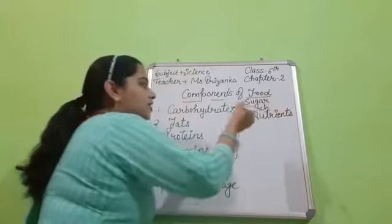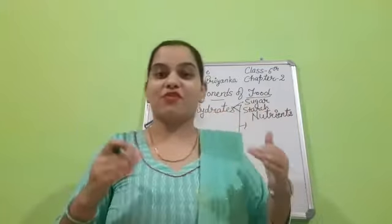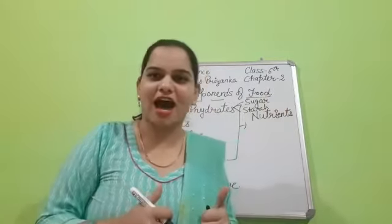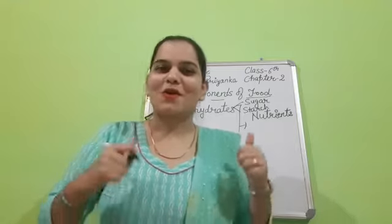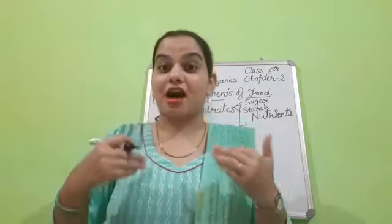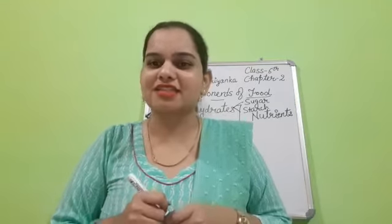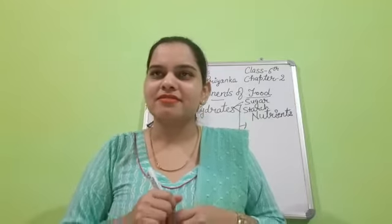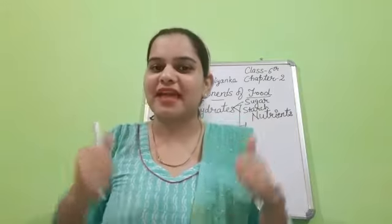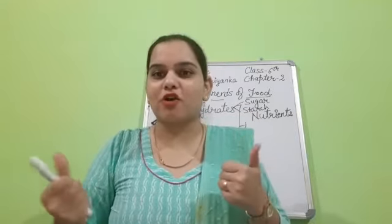Sugar is the simple form and starch is a complex form. What is sugar? Simple form. And what is starch? Complex form. Great. Foods rich in carbohydrates are potato — do you eat potato? Yes, ma'am. What does it contain? Carbohydrate. Great. Bread — do you eat it? Yes, ma'am. Table sugar used in tea or coffee. Honey — do you eat it? Yes, ma'am.